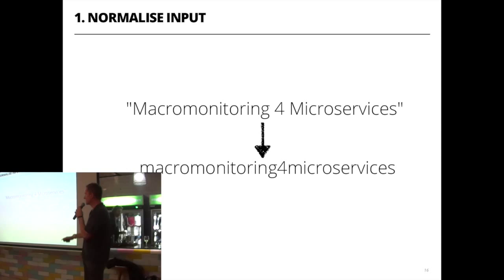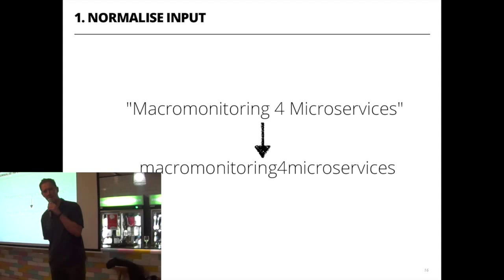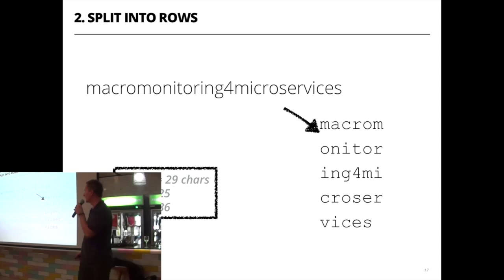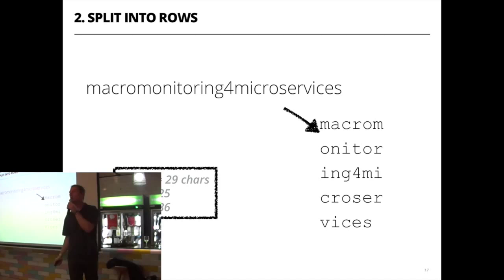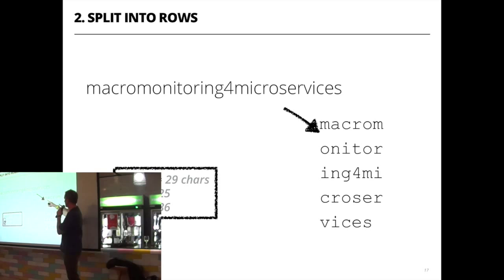The algorithm is pretty straightforward. You take the plain text, then: first, you normalize it — strip all whitespace, downcase everything, remove punctuation. Second, you split that normalized text into rows. In this case they're six-character rows. How do you work out the row width? You find the length of the plain text — 29 characters — then find the smallest square greater than that length: five squared is 25, less than 29; six squared is 36. So six is the width of the rows, building the plain text into something approximating a square.